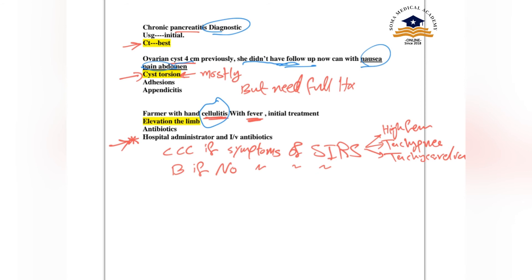For a farmer with hand cellulitis and fever, it is very important to know whether there are systemic inflammatory symptoms. If there are systemic inflammatory symptoms — high fever, tachypnea, tachycardia — we must admit the patient and give IV antibiotics. If there are no systemic symptoms, treat with oral antibiotics.